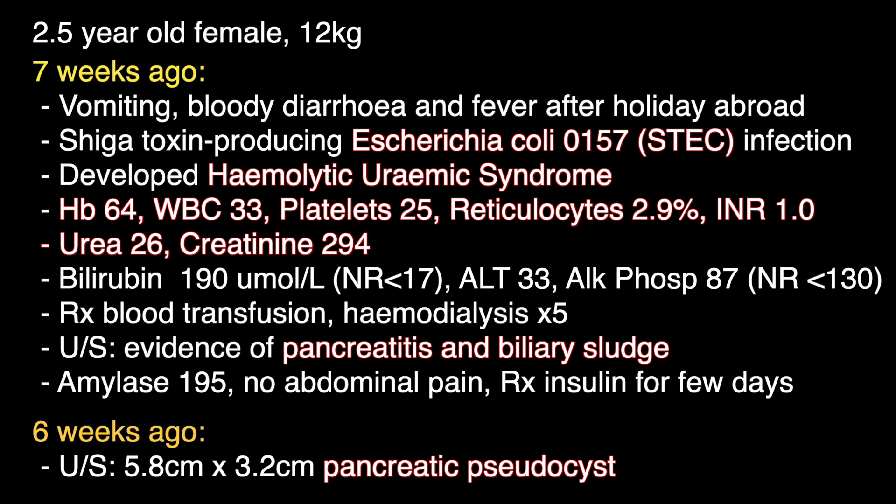She developed acute kidney injury with a urea of 26 and a creatinine of 294. Apart from the raised bilirubin of 190 micromoles per litre, the rest of the liver biochemistry was initially normal. She was transferred to a specialist centre and treated with blood transfusion and haemodialysis. An abdominal ultrasound showed evidence of acute pancreatitis and biliary sludge.